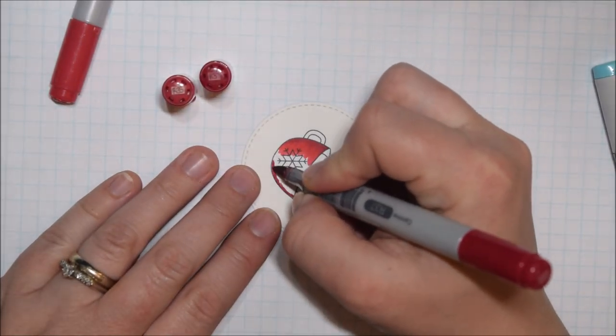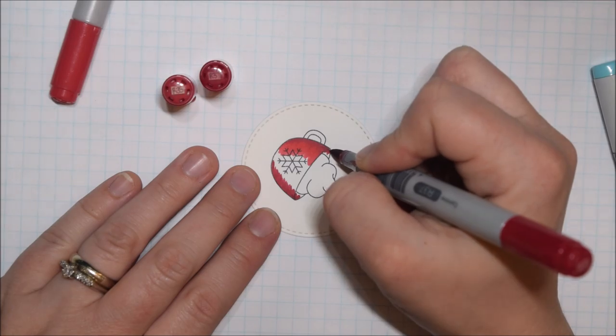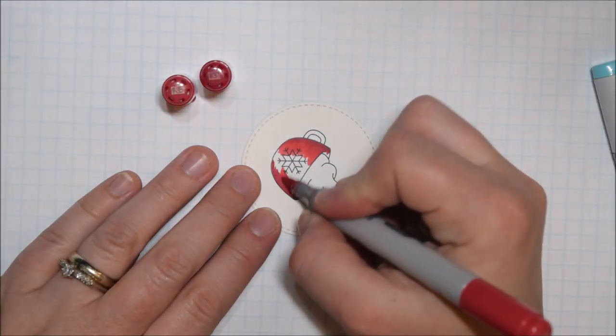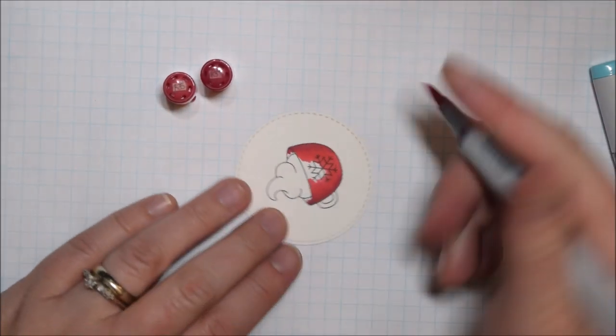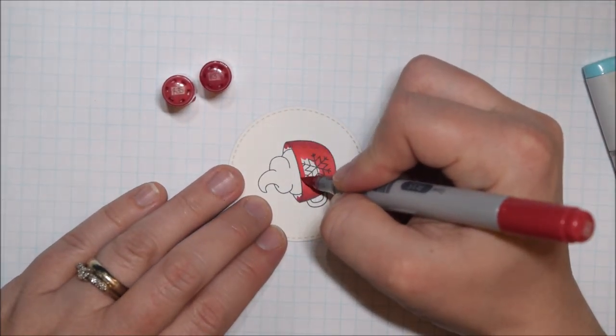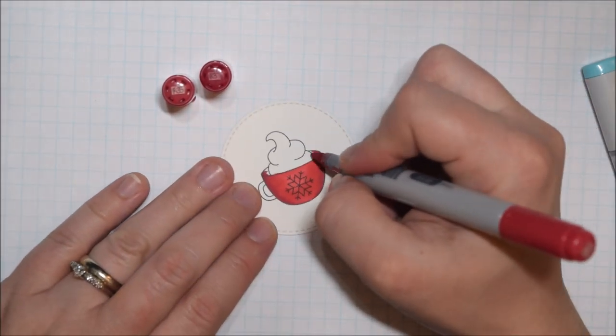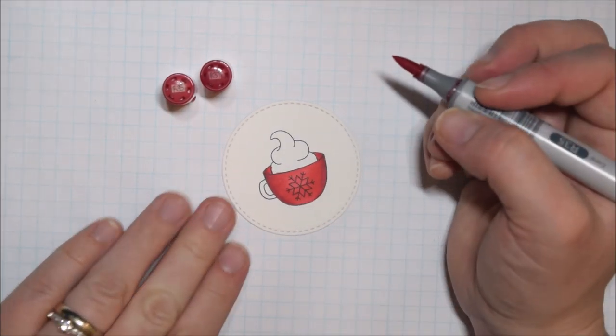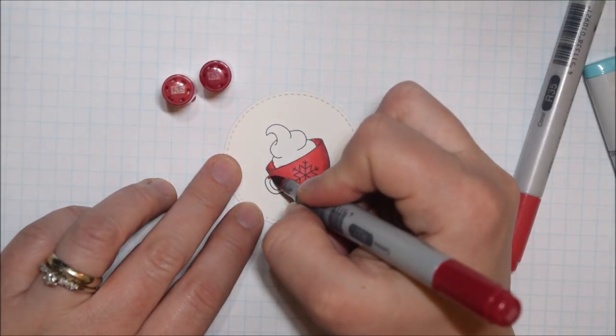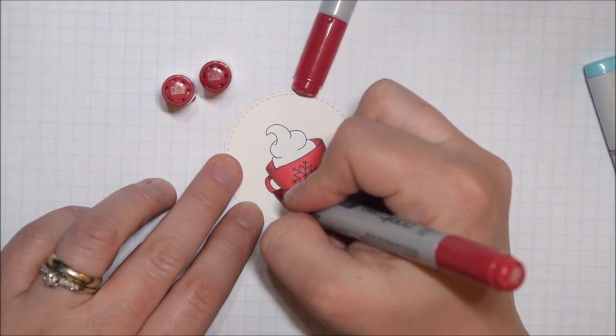A lot of the images from the Cup of Cocoa stamp set include whipped cream because they're supposed to be cocoa cups, so for those I just came in with a C1 marker. For all of my reds I used R35 and R37, and I decided that all of the images would just be cocoa in the cup, so I didn't color any that had the actual liquid showing in the cup.